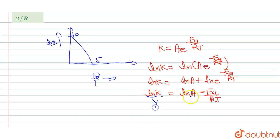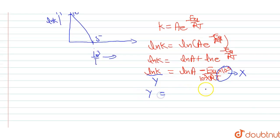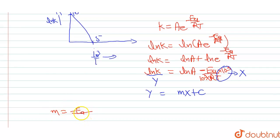Here ln K is on the y-axis. If we multiply or divide by 10³, then 10³/T equals the x-axis. So this equation takes the form y equals mx plus c, where y is ln K, x is 10³/T, c is ln A, and the slope m equals −Ea/(10³·R).